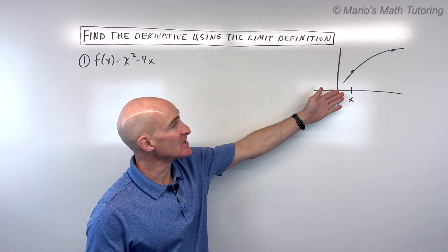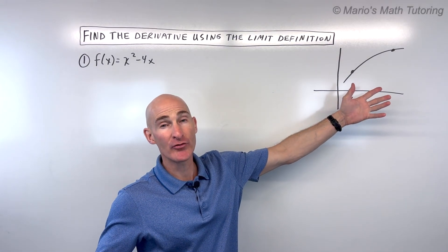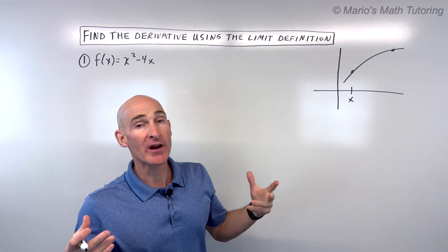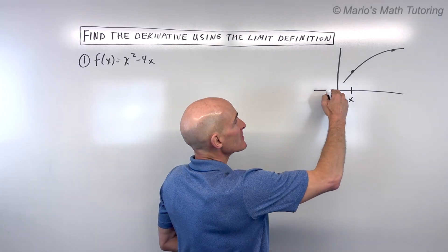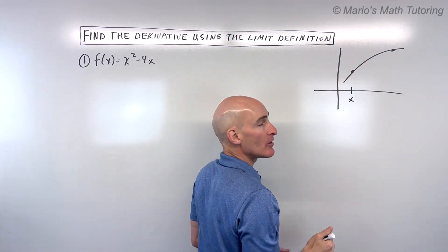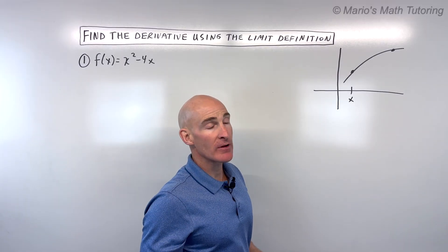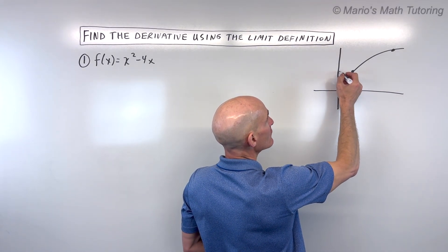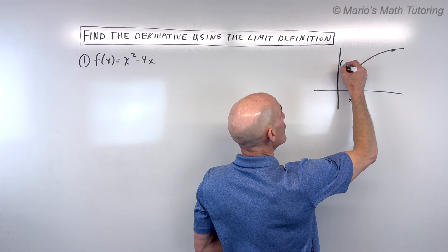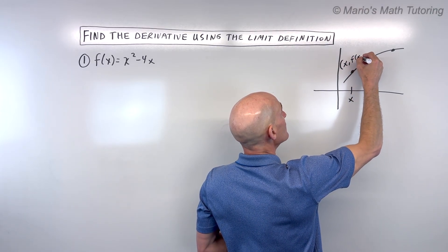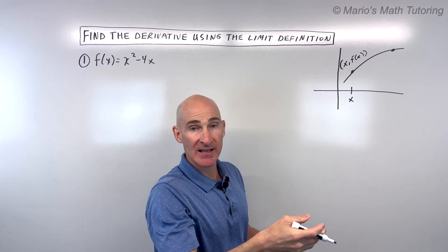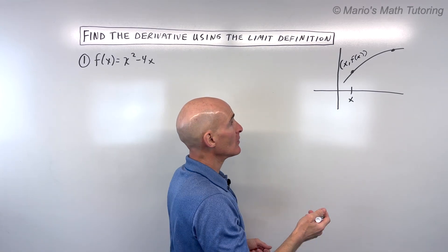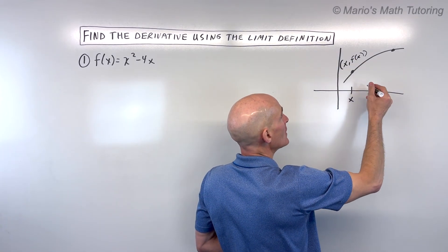The first thing is, what do we mean when we're talking about the derivative? Let's talk about where it comes from. Let's say that this is your function here, or your curve. You have a point on the curve — let's say x. When you go up to that point on the curve, the y-coordinate is going to be f of x. You put that x value into your function, and out comes the y value, or the f of x value.